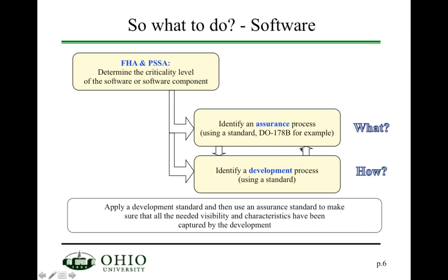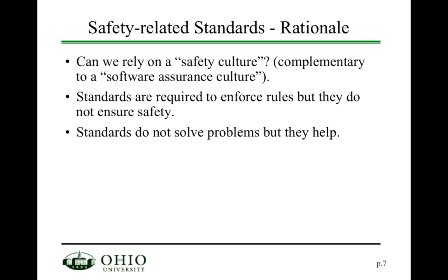You identify an assurance process by looking at a standard that describes it and tells you what to do. Then you identify a development process by looking at standards that describe how to do things specifically. The fact that you use a standard doesn't mean your product is going to be safe. Standards typically describe a set of rules and guidelines, and when you adhere to them you're more likely to have a safer product — but it doesn't mean it will be completely fault-free. Standards do not solve problems, but they help give you a streamlined process to deal with and reduce the introduction of problems.